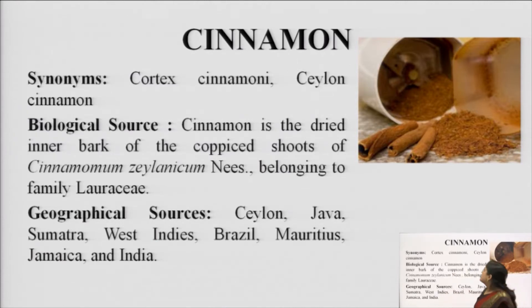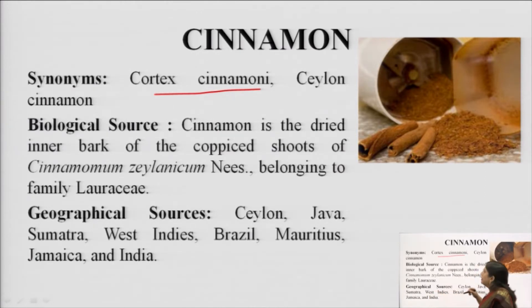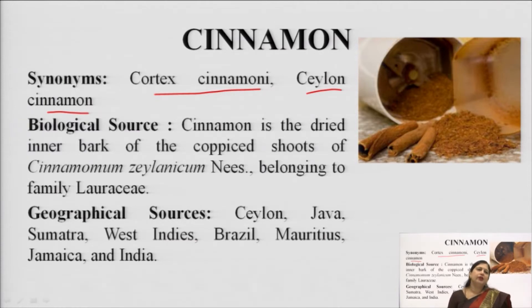Cinnamon is commonly known as dal chini and is also called cortex cinnamini — cortex because the drug is mainly the bark of the tree. It is also known as Ceylon cinnamon because of its origin in Ceylon, basically in South East Asia. The biological source is that it consists of the dried inner bark of the coppiced shoots of Cinnamomum zeylanicum belonging to the family Lauraceae.